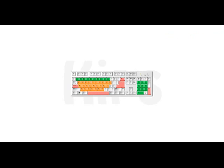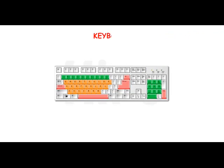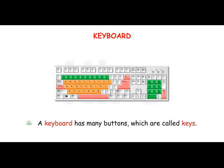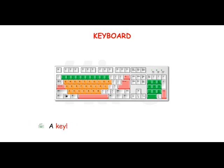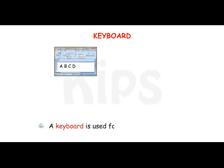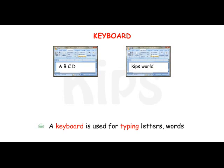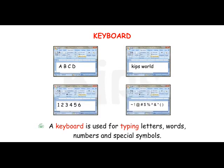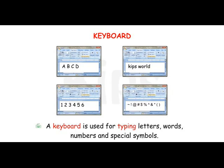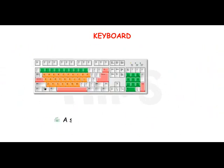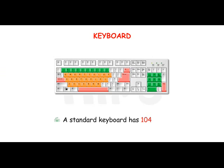Now let's talk about the keyboard. A keyboard has many buttons which are called keys. A keyboard is used for typing letters, words, numbers and special symbols. A standard keyboard has 104 keys.